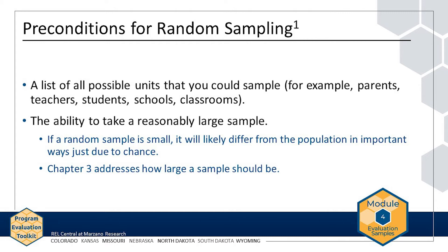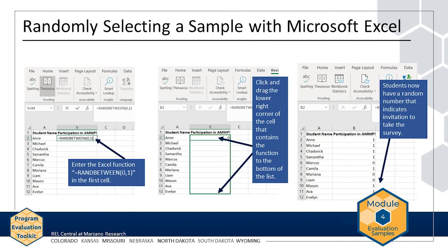Chapter 3 addresses the issue of how large a sample should be. A computer program such as Microsoft Excel can generate random numbers to determine which units from a list to sample. The units that will be sampled do not always have to be the same as the individuals who will be observed. For example, you might sample schools in order to collect data on students in those schools.